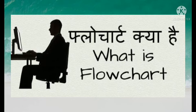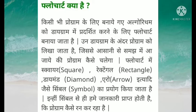Flow chart kya hai? Kisi bhi program ke liye banaye gaye algorithm ko diagram mein pradarshit karne ke liye flow chart banaya jata hai. Us diagram ke andar program ko likha jata hai, jis se asaani se samajh mein aajaye ki program kaise chalega. Flow chart mein square ka sign, rectangle ka sign, diamond ka sign, arrow ka sign, ityadi jaise symbols ka prayog kiya jata hai.